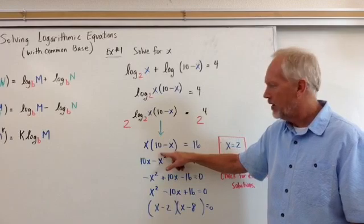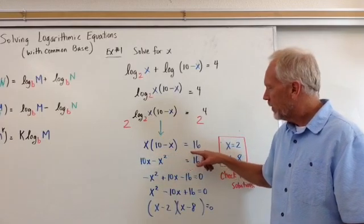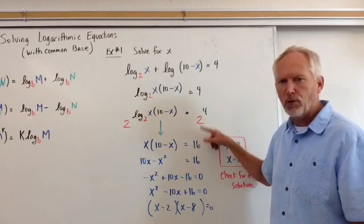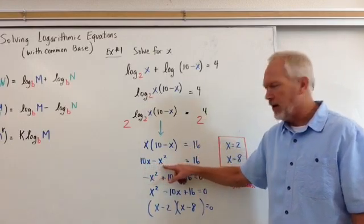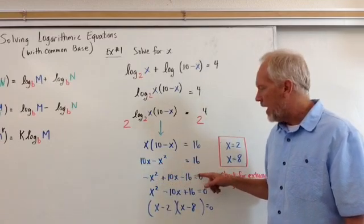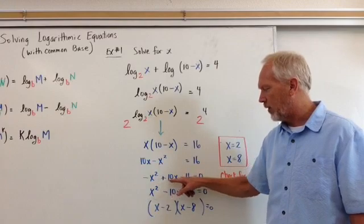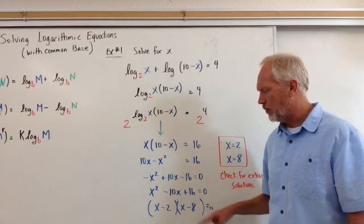And we get x times 10 minus x equals 2 to the 4th, well, 2 to the 4th is 16. 10x minus x squared, after we distribute, is equal to 16, and then we get negative x squared plus 10x, bring the 16 across, we get negative 16 equals 0.